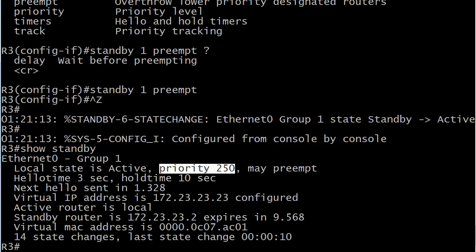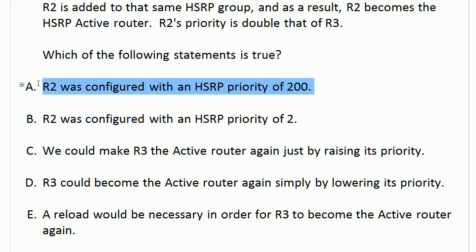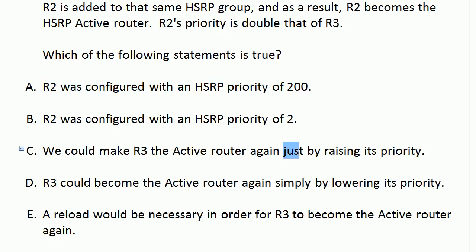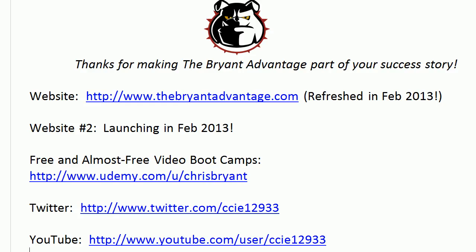So let's go back to our choices. A was correct — R2 was configured with a priority of 200. That is really the only correct choice on the board, because it wasn't enough just to raise R3's priority as we saw in the live equipment; we had to put the preempt command as well. And we definitely didn't have to reload, which we're grateful for. Thank you so much for taking today's Switch Quick Quiz. I'm Chris Bryant — thanks for making CBT Nuggets part of your CCNP success story.